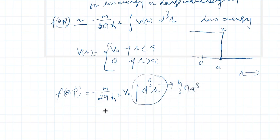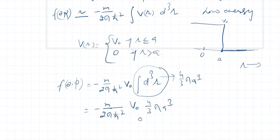if you put all these values then it is m over 2π ℏ² into V₀ 4/3 π a³. And this π will cancel out with 2, so it is 2m V₀ a³ over